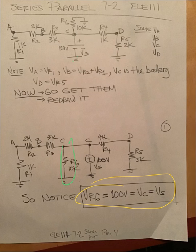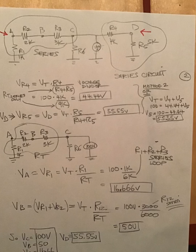VR6 is equal to the battery. I mean, they're directly in parallel with each other. No ifs, ands, or buts. So VR6, which is VC, is also 100 volts.